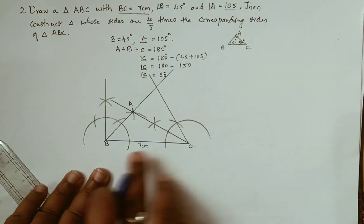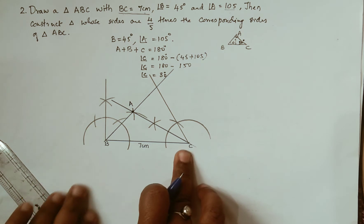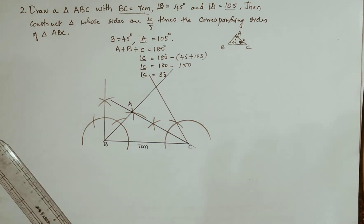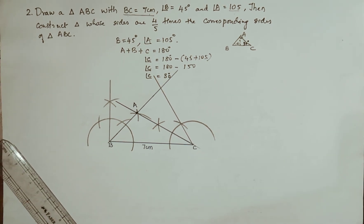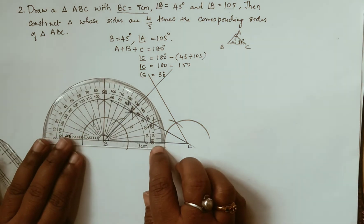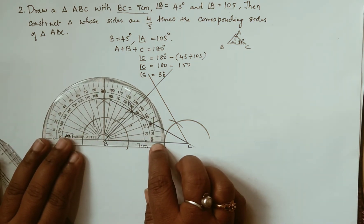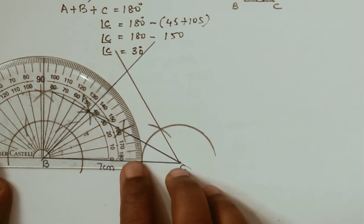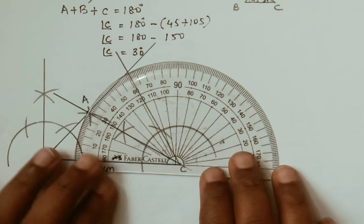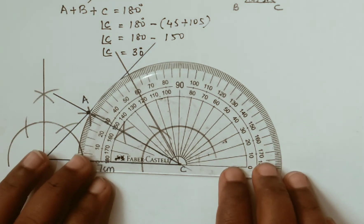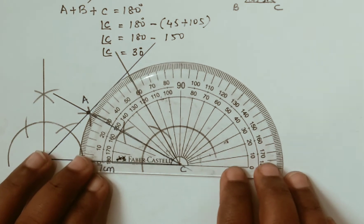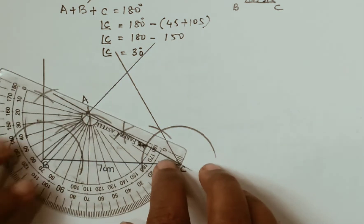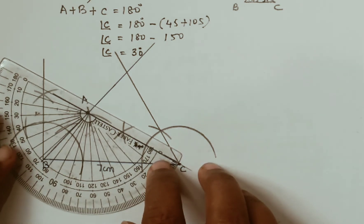Now we will measure using the protractor whether it is 45° and 30°. You can see it is exactly 45°. And here when you see, it is 30°. Now when we measure this angle at A, it will be 105°.